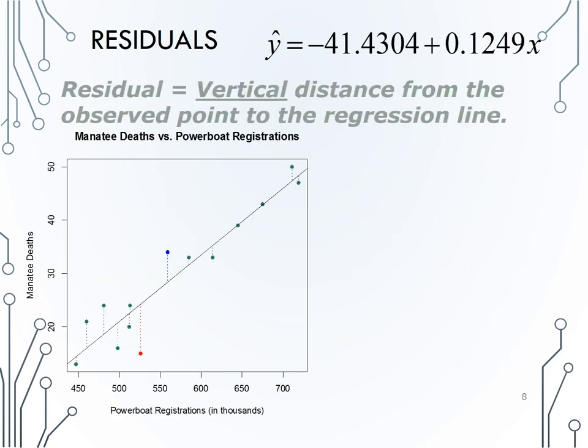Let's discuss residuals a bit more, which remember are the vertical distance from an observed point to the regression line. Here, we see each of the residuals for every data point marked as a dashed line on the scatter plot.